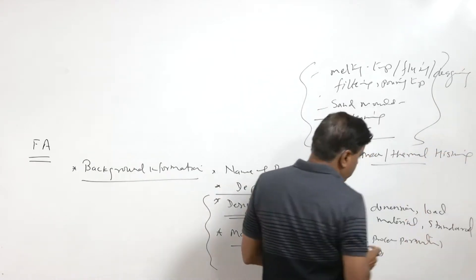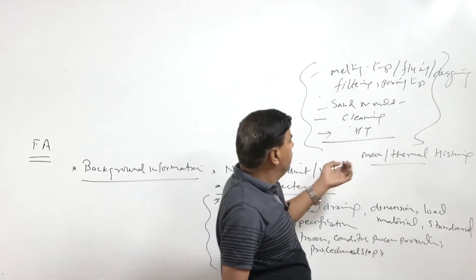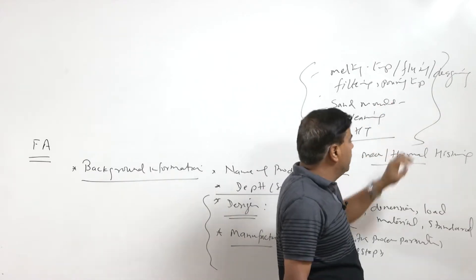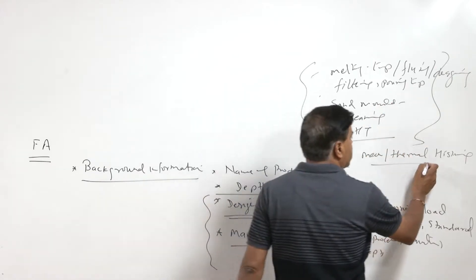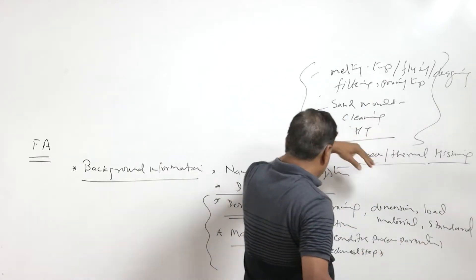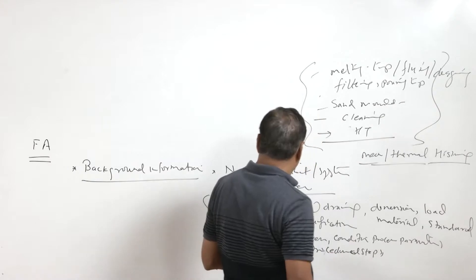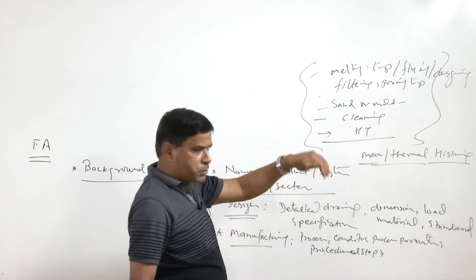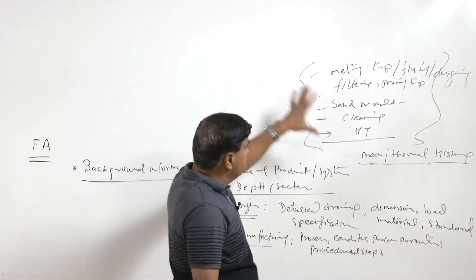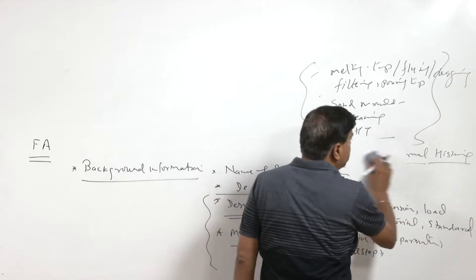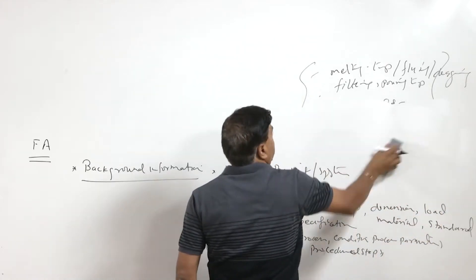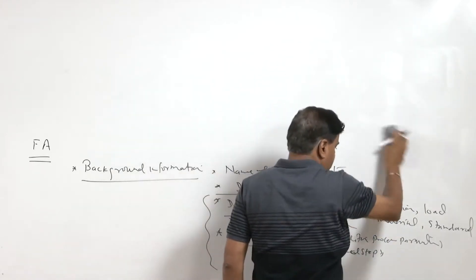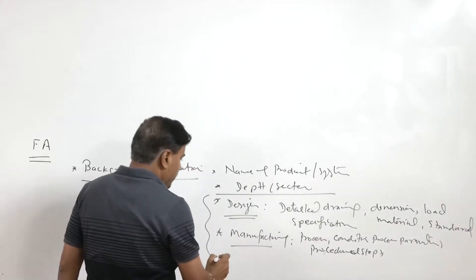Thermal history means the product will show traces if it has been processed through mechanical or thermal approaches like casting and welding. This thermal history can be obtained through detailed characterization of the product, which will suggest whether it was made by casting or subjected to post-weld heat treatment correctly or not. It is important that complete detailed information about the manufacturing process and procedural steps is obtained.